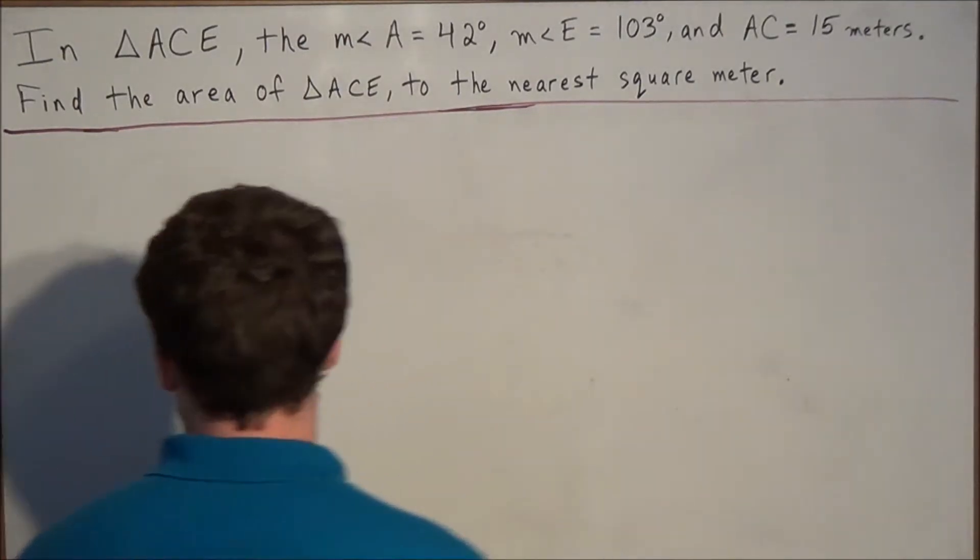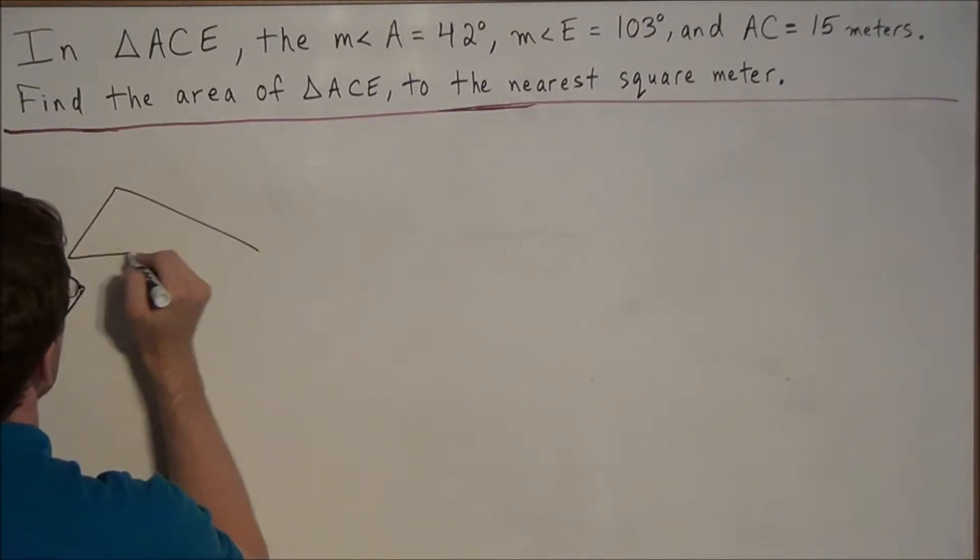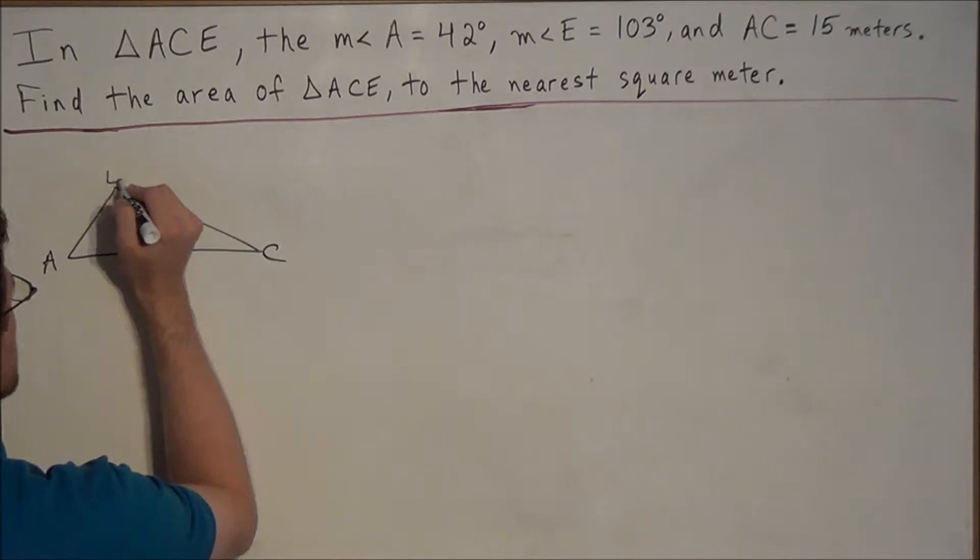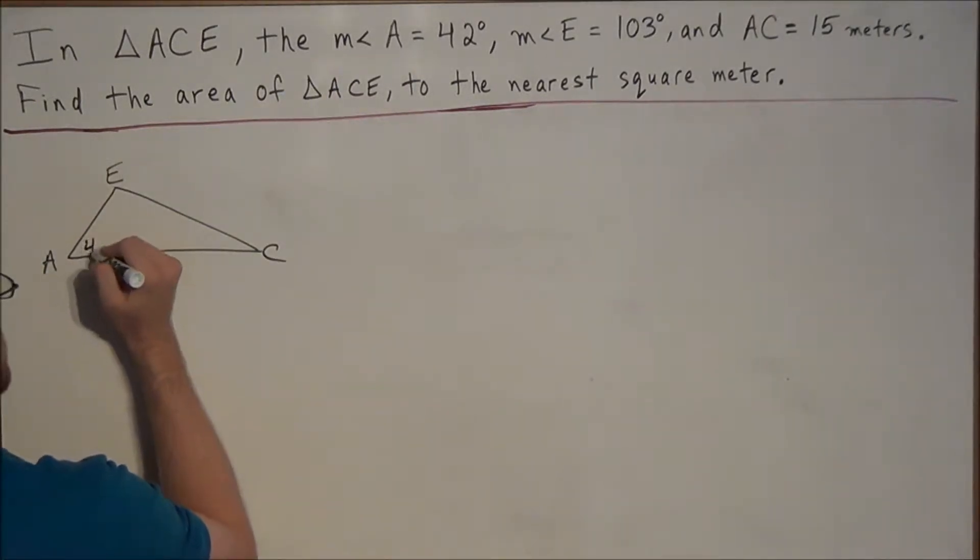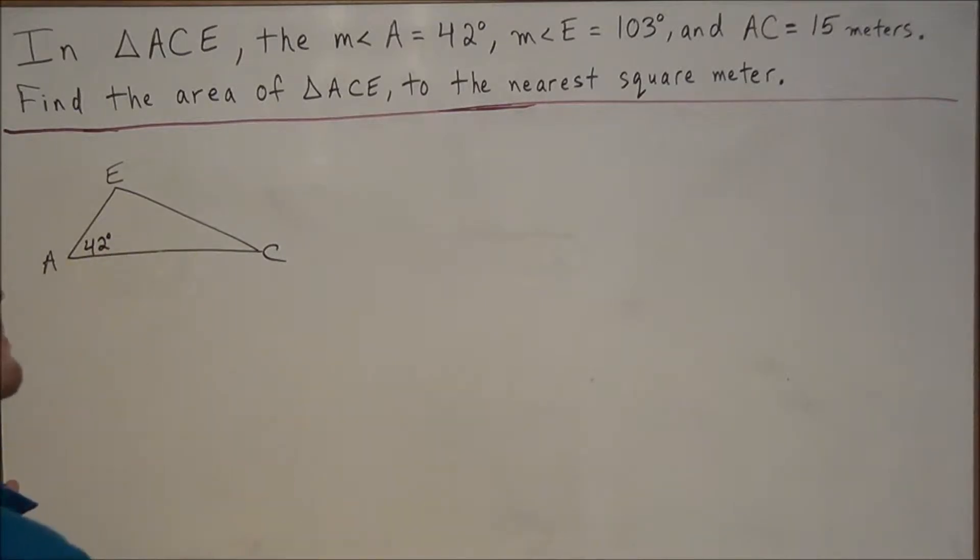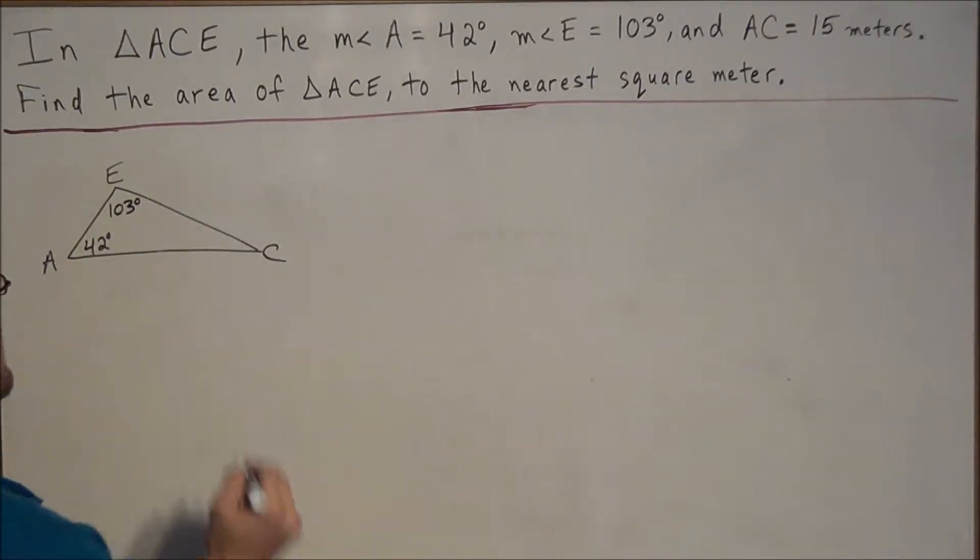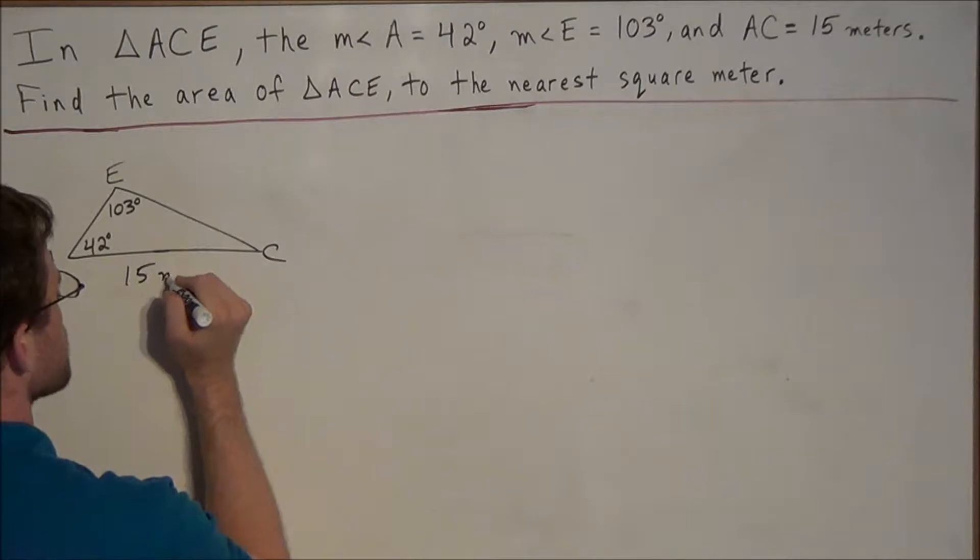So the first thing we should do with this problem is draw a diagram of our triangle so that we could label it accordingly. So we're looking at triangle ACE, and we could label the measure of angle A is 42 degrees, the measure of angle E is 103 degrees, and the side AC is equal to 15 meters, which we could just abbreviate with M.